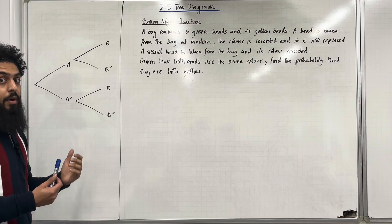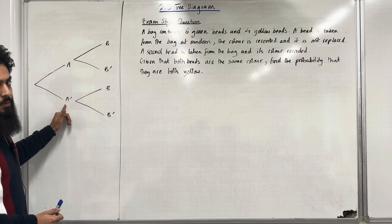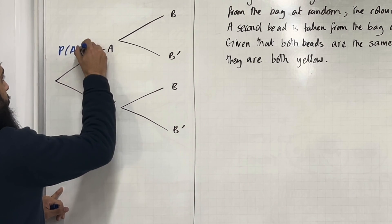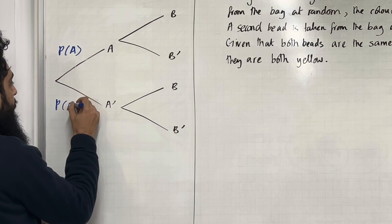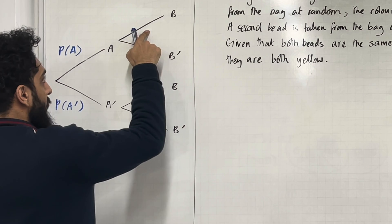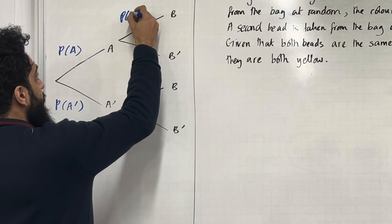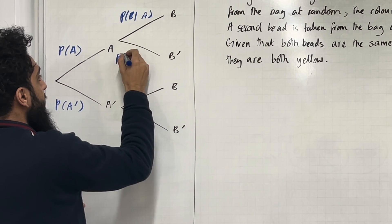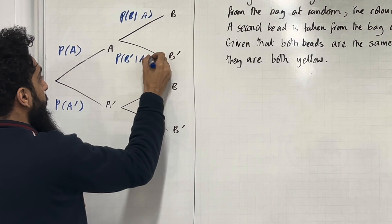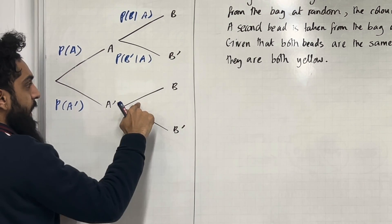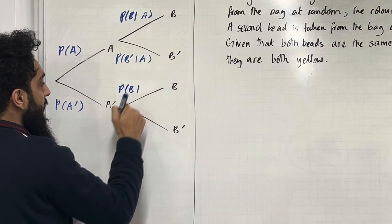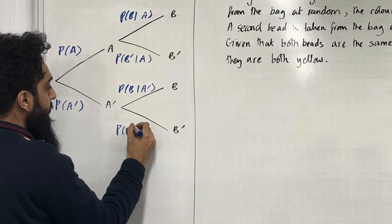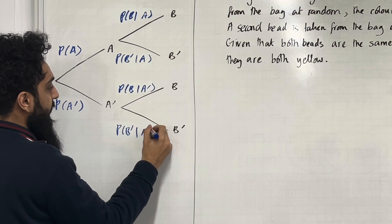These two branches are conditioned upon the event not A taking place. This branch represents probability A. This branch represents probability not A. This branch represents probability B given that the event A has taken place. This one represents probability not B given that A has taken place. This one represents probability B given that not A has taken place. This one represents probability not B given that not A has taken place.